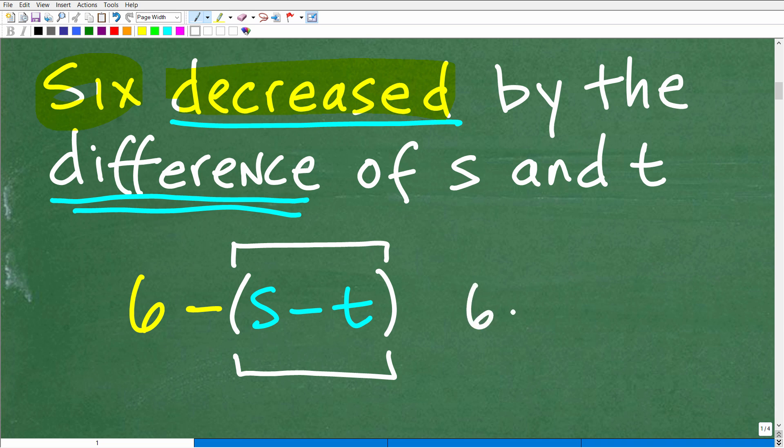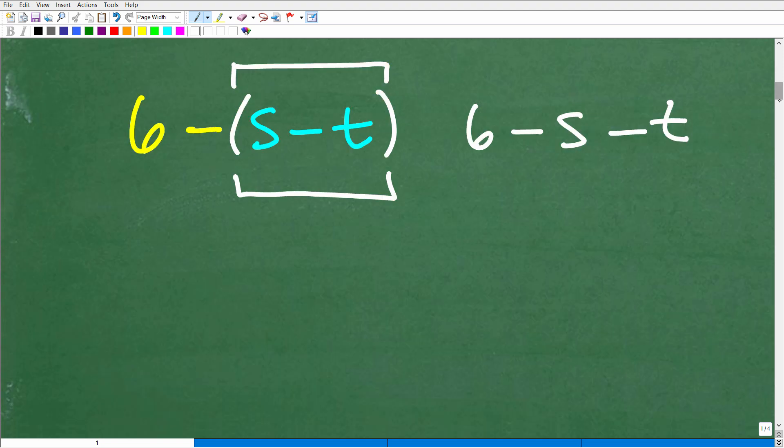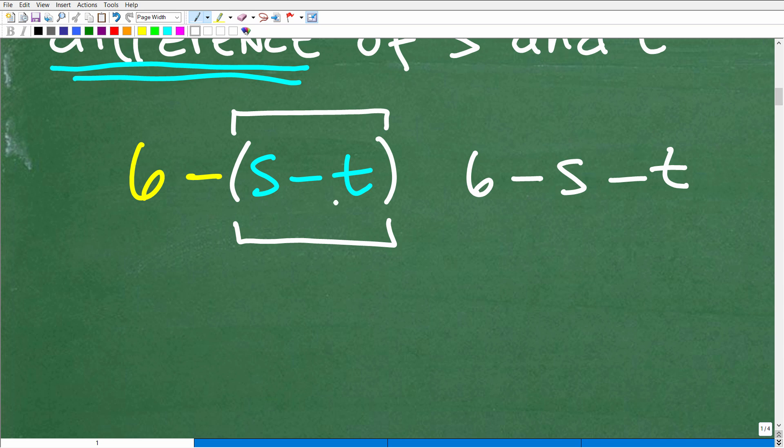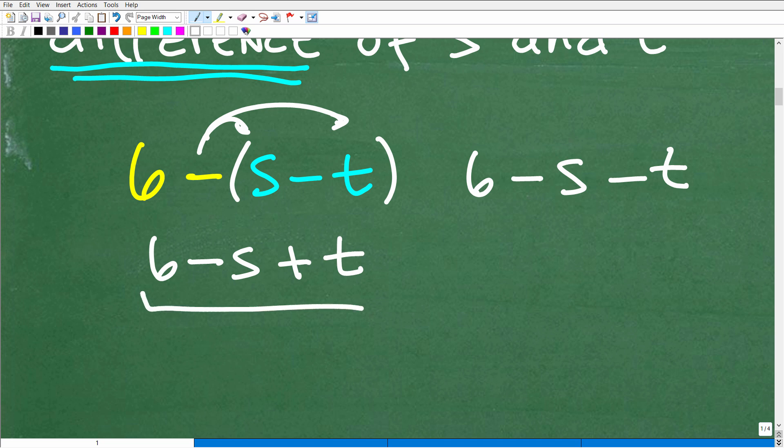If you go like this, six minus S minus T, this is not right. This is six decreased by S, then decreased by T. That's a different expression. Okay, so here, if you look at six minus S minus T, if I use the distributive property, I can take this negative sign and I can multiply it in. So this would be six minus S plus T. Okay, you can see this is obviously different than this. Yes.